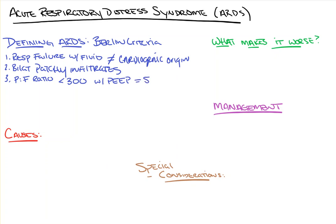This is then further stratified into mild, moderate, and severe, where moderate is a P-to-F ratio of 200 to 300.